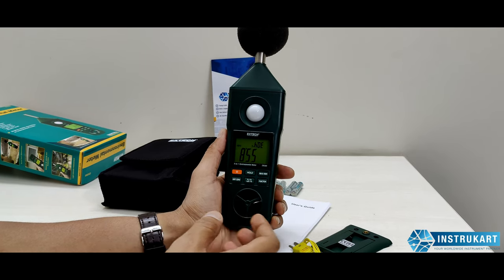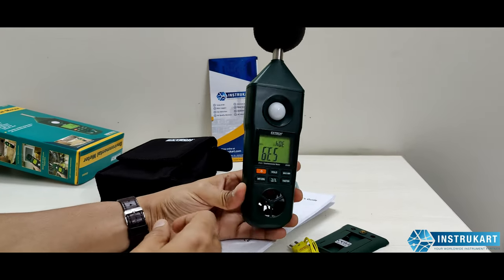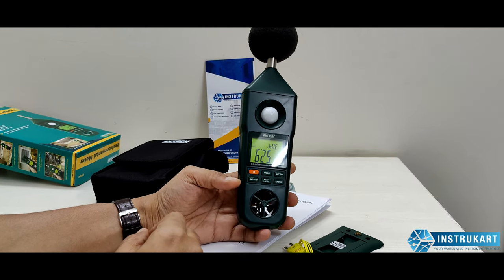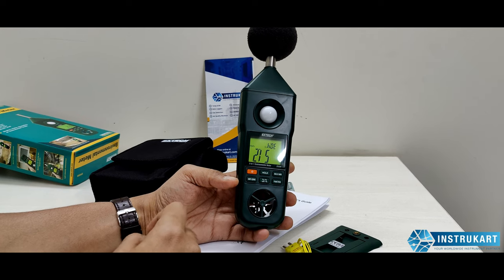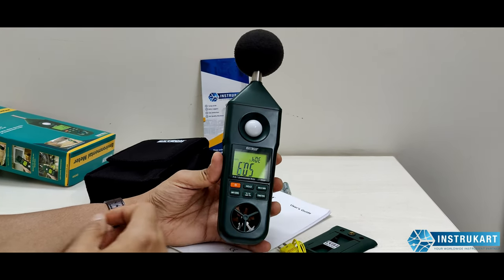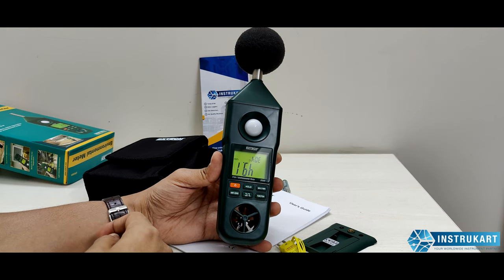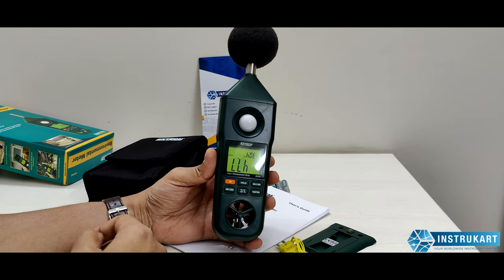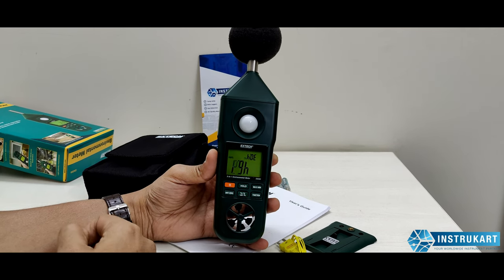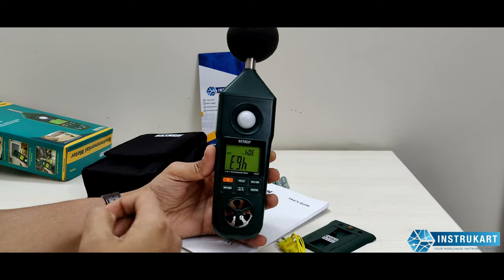For sound, it measures 30 dB to 130 dB with an accuracy of plus or minus 1.4 dB. For light, it measures up to 1860 FC or 0 to 20,000 LUX with an accuracy of plus or minus 5 percent.